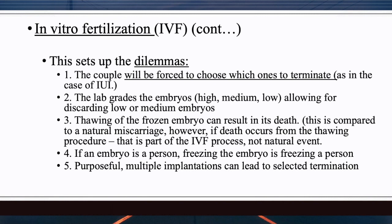Dilemma four: if an embryo is a person from conception, then freezing the embryo is the same as freezing a person. The book compares it this way: a mother and father would never consider freezing their five-year-old — similar to cryogenics science-fiction scenarios where people are frozen and thawed decades later when a cure is available. We would never think of freezing a person, yet that is exactly what takes place when an embryo is frozen.